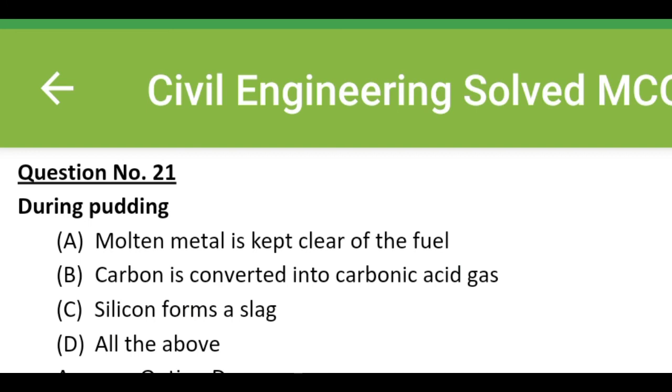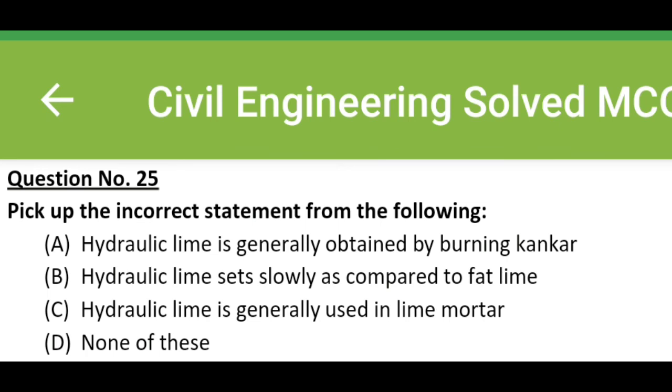During puddling: Option A, molten metal is kept clear of fuel. Option B, carbon is converted into carbonic acid gas. Option C, silicon forms a slag. Option D, all the above. The correct answer is option D, all the above.